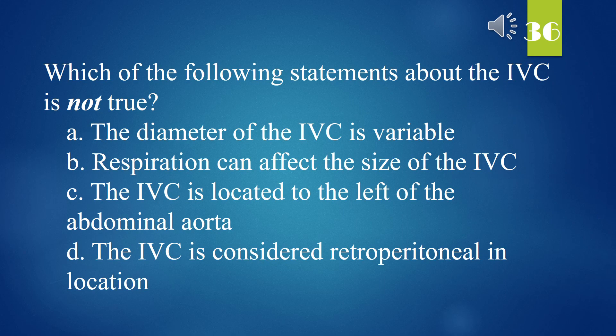Which of the following statements about the IVC is not true? A. The diameter of the IVC is variable. B. Respiration can affect the size of the IVC. C. The IVC is located to the left of the abdominal aorta. D. The IVC is considered retroperitoneal in location. The answer is C. The IVC is located to the left of the abdominal aorta.